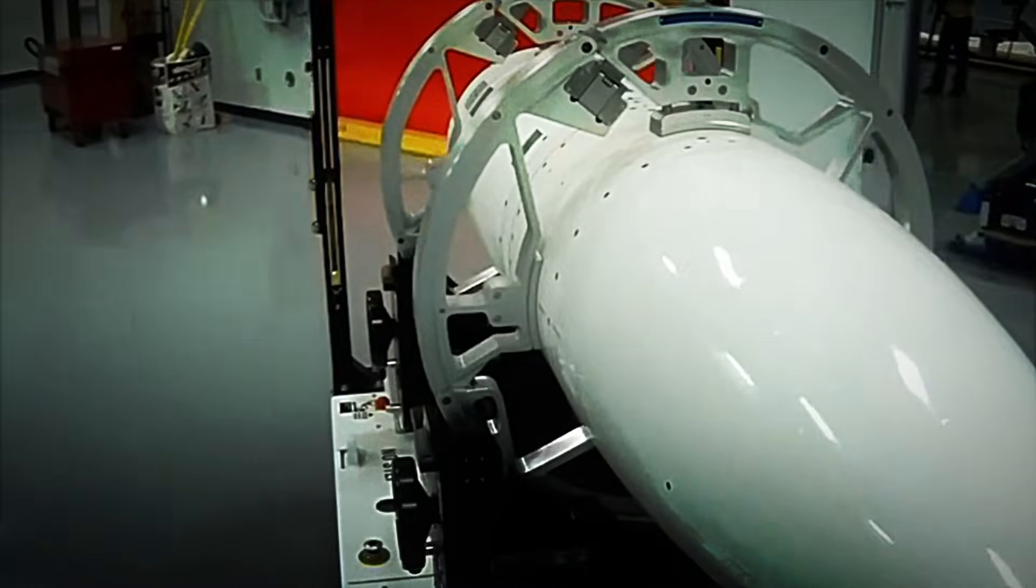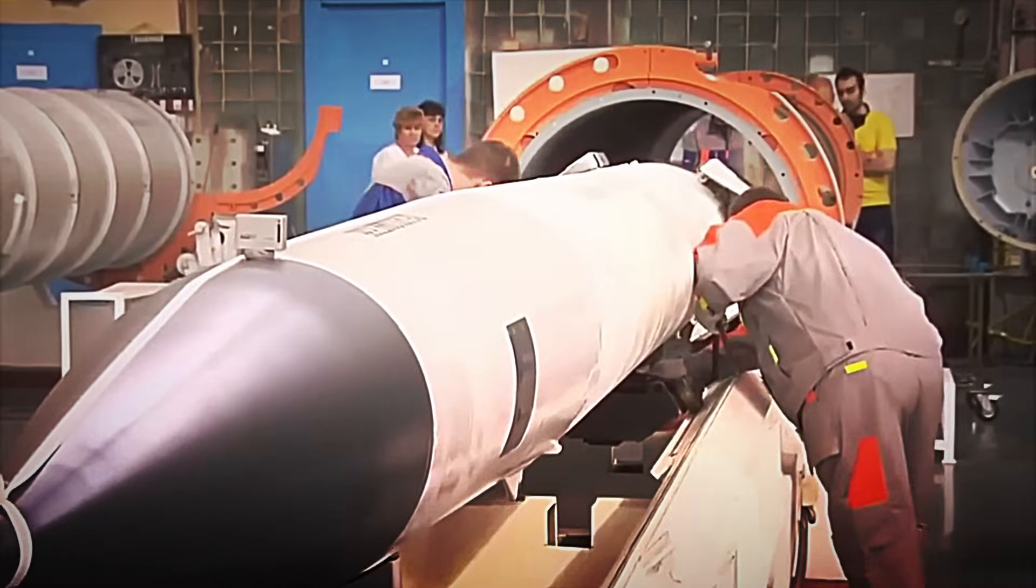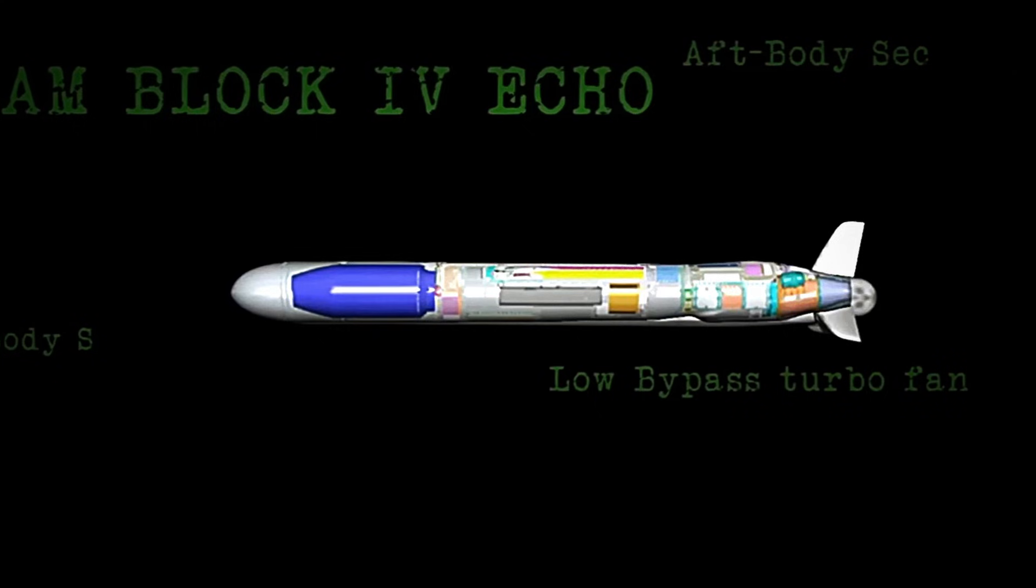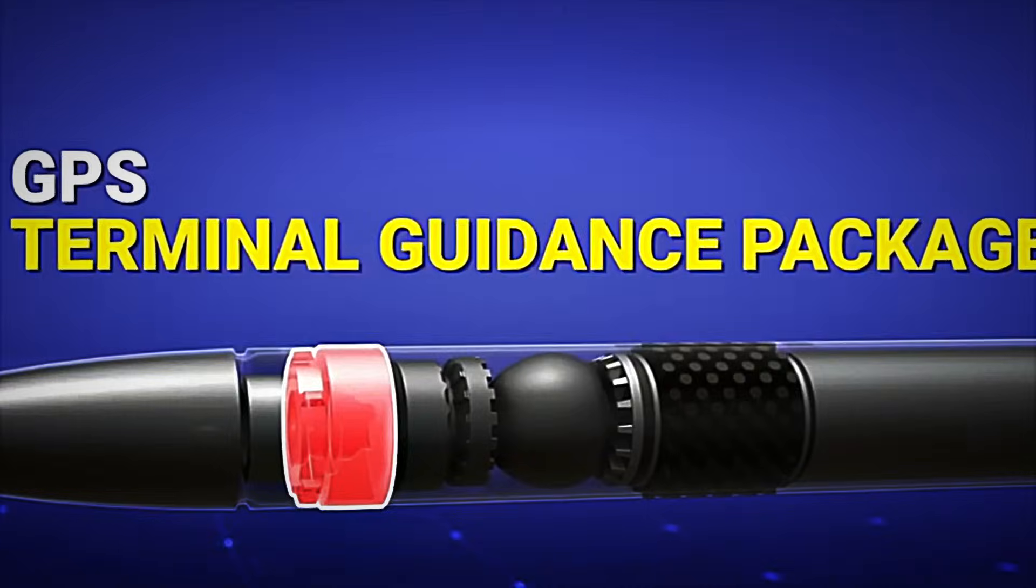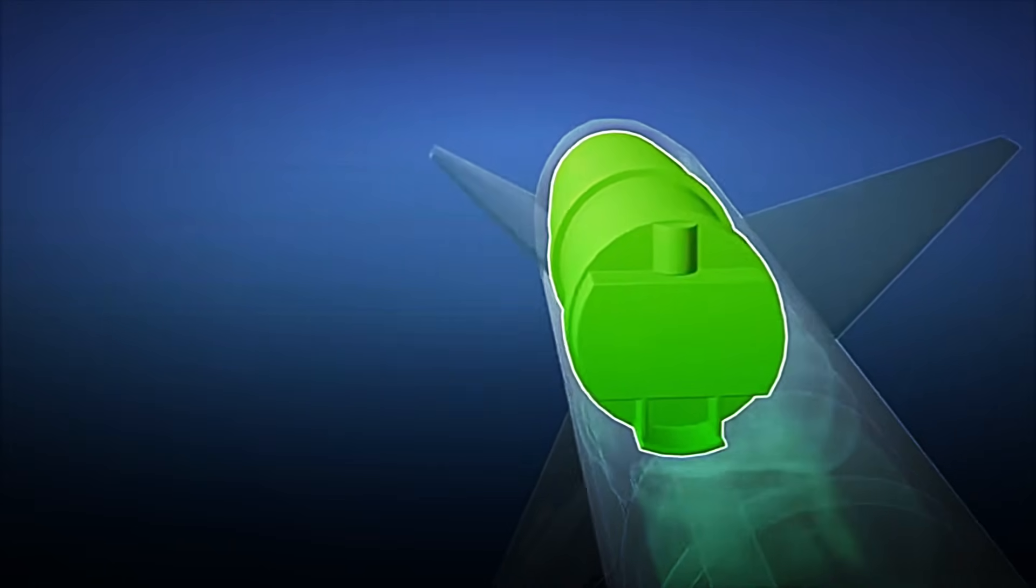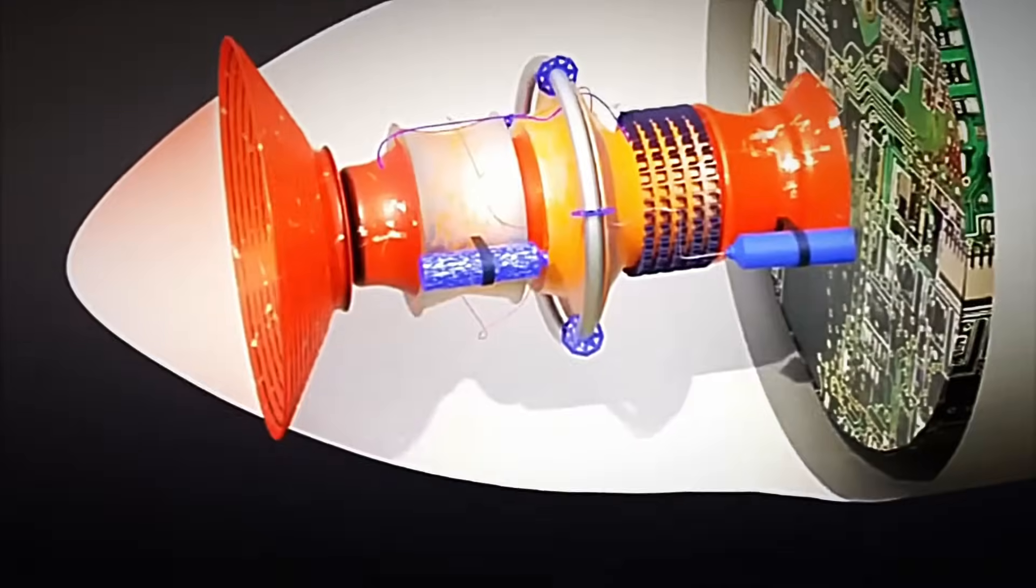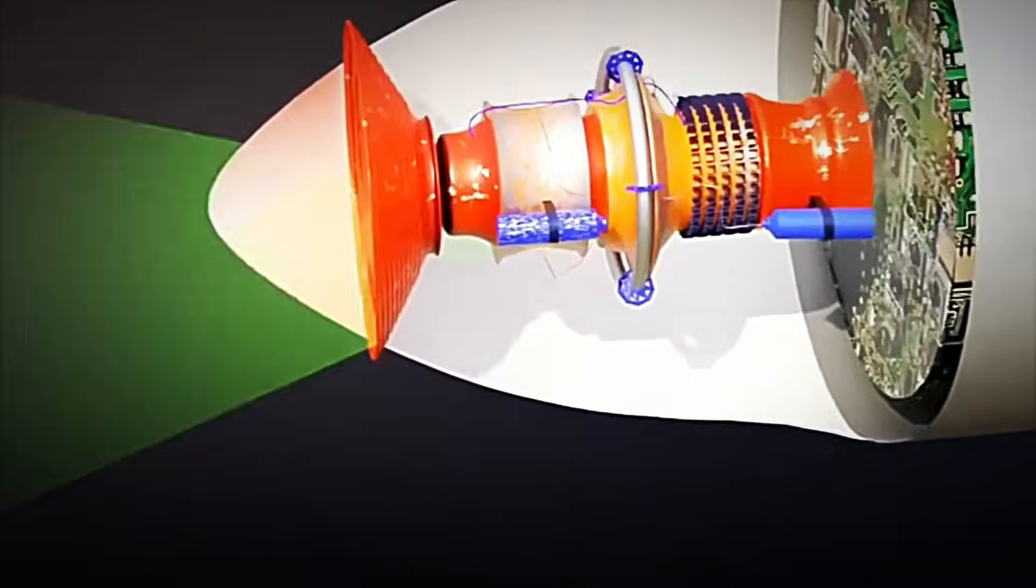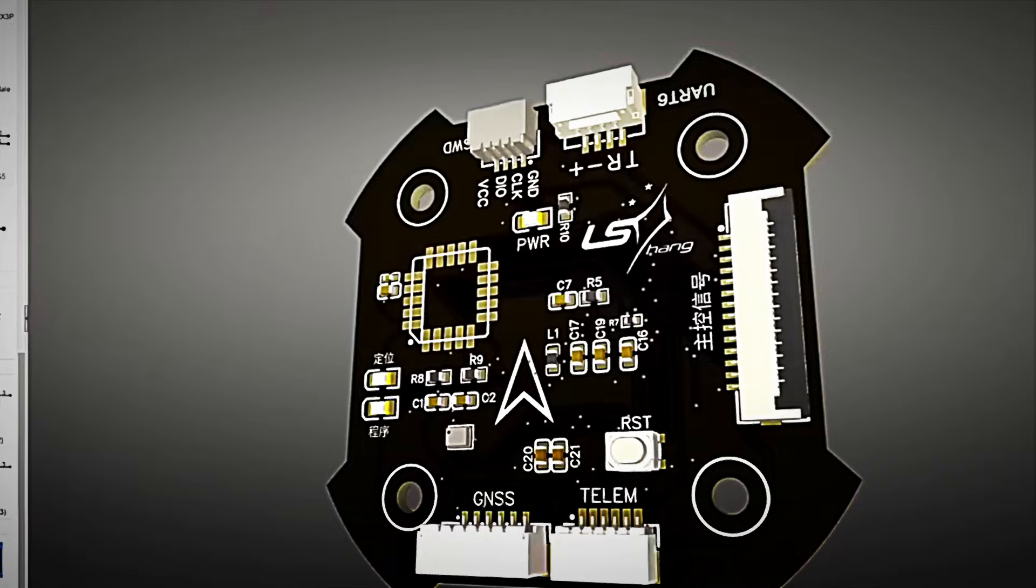Once the shell is completed, the most sensitive phase begins: the integration of the internal systems. This is where the navigation processors, avionics, thermal sensors, GPS module, gyroscopes, accelerometers, and infrared seeker are inserted. The front seeker is the piece that allows it to distinguish a target, even when visibility is minimal. In situations where an optical camera would fail—fog, dense clouds, or nighttime conditions—the infrared sensor interprets the thermal signatures of the environment and acts as an additional guide.